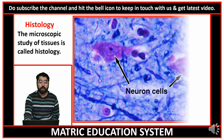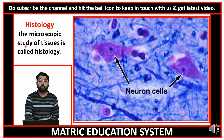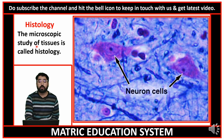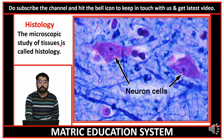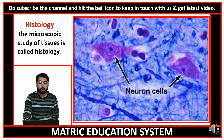Histology: the microscopic study of tissue is called histology. جانداروں کے tissue cells سے مل کر بنے ہوتے ہیں اور ایک cell کو ننگی آنکھ سے نہیں دیکھ سکتے، اس لیے microscope کی ضرورت پڑتی ہے۔ Histology میں body سے tissue لیے جاتے ہیں، ان پر dyes اور stains کیے جاتے ہیں، پھر microscope کے نیچے دیکھا جاتا ہے۔